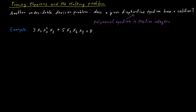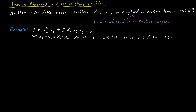If you stare at this equation for some time, you will see that there is a solution. If we set all the variables to 1, then this equation is satisfied. We have 3·1·1²·1, which is just 3, plus 5·1·1·1, which is just 5, so 3 plus 5 is 8.